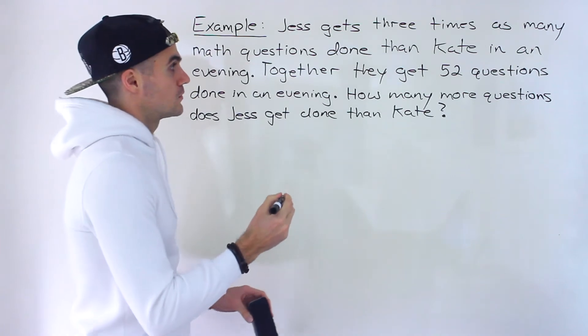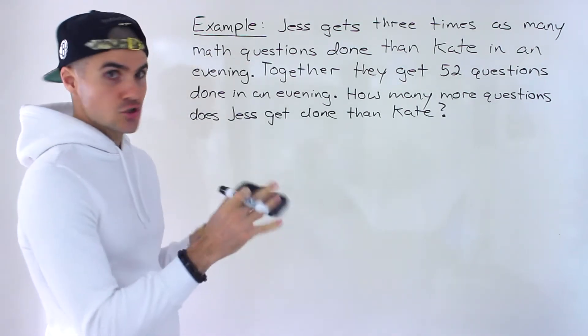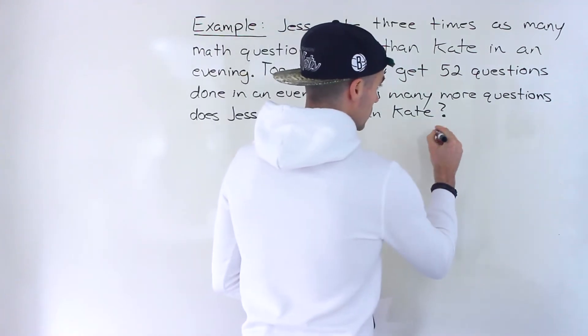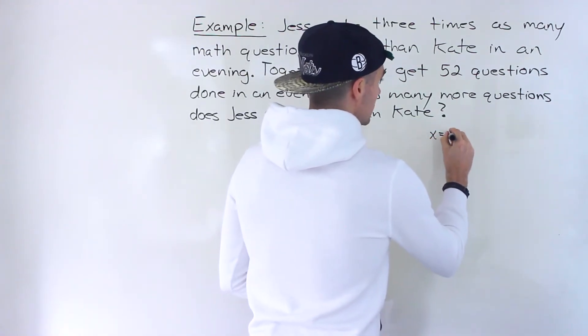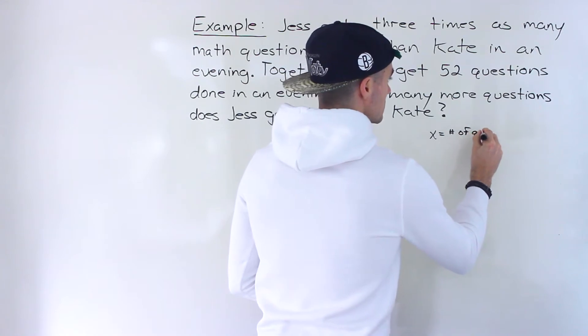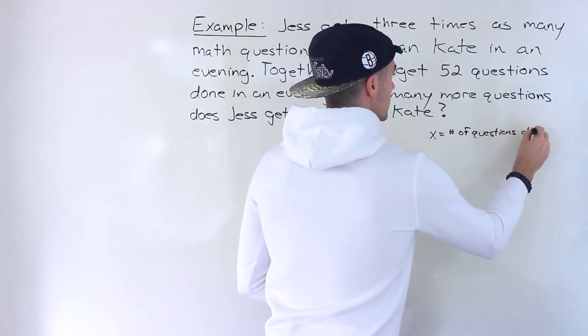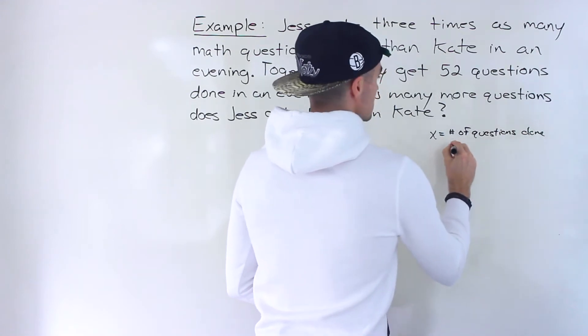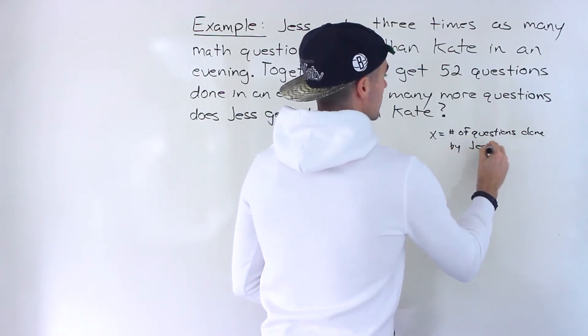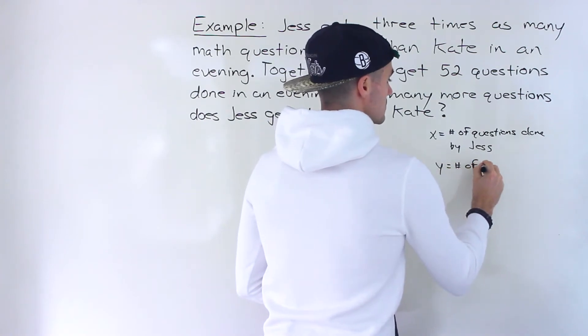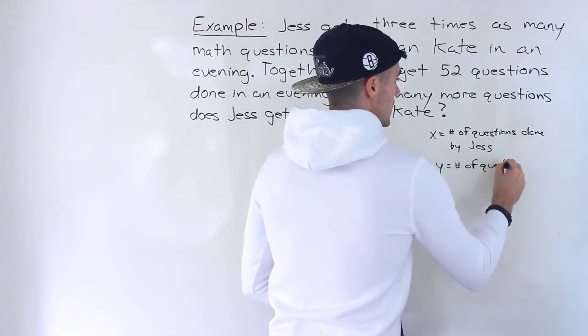Okay, so what we're going to do here is introduce two variables. We're going to let x equal the number of questions done by Jess, and let y equal the number of questions done by Kate.